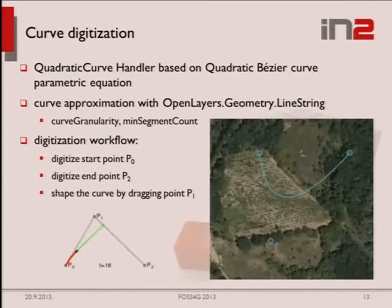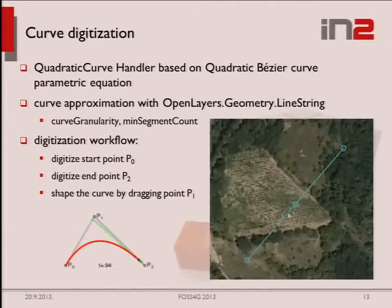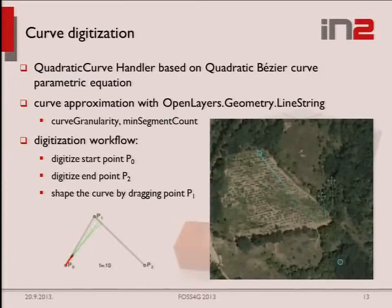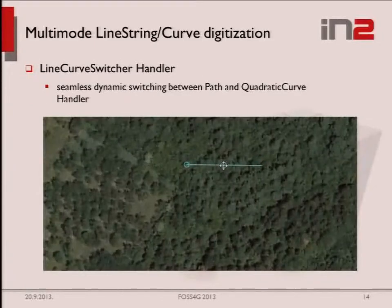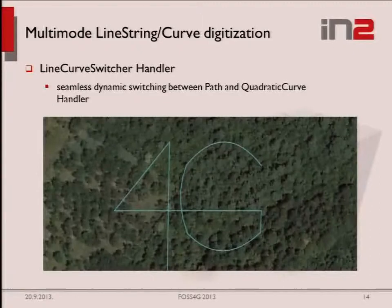The first challenge was the need for a curve digitization tool. We implemented a quadratic curve handler based on the quadratic Bezier curve parametric equation, and in the end we approximate it with line geometry. You digitize the first point, the last point, and then use an apex to reshape the curve. We also did a line-curve switcher handler, which enables seamless switching between arc digitization and linear segment digitization for fast digitizing.